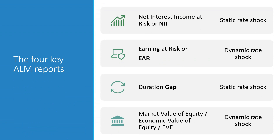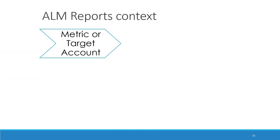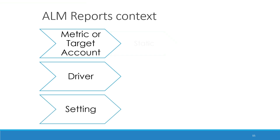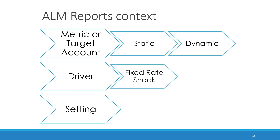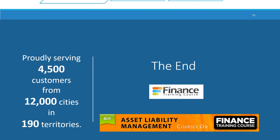Earning refers to net interest income, or NII. We look at both absolute levels and the shift in NII due to interest rate change. Value refers to the net change in assets and liabilities because of interest rate shifts — whether positive or negative — and the value equation directly affects and impacts shareholder equity.